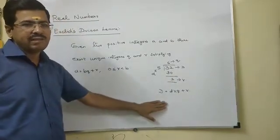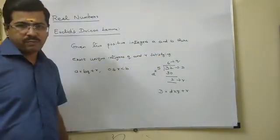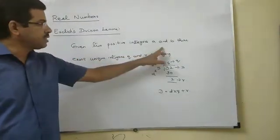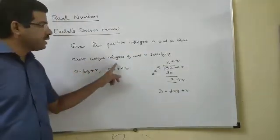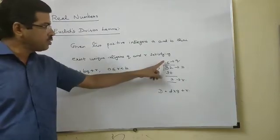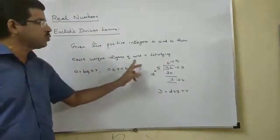Now, in 10th standard, two positive integers A and B are taken. If you divide these two positive integers, there exist unique integers Q and R. Same way, Q is the quotient, R is the remainder.